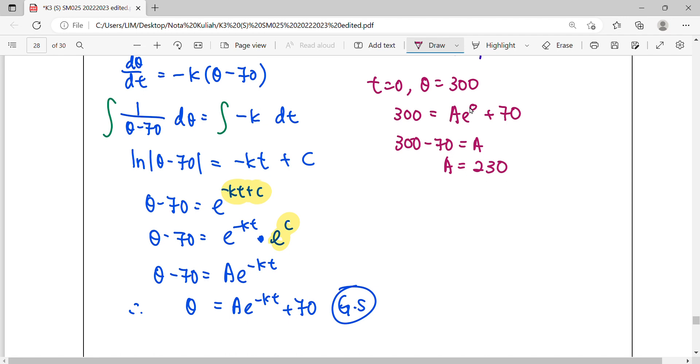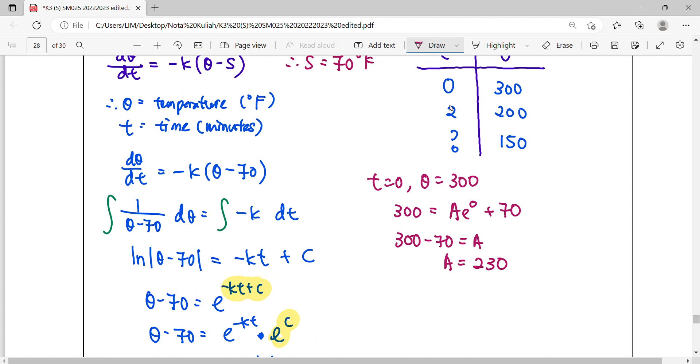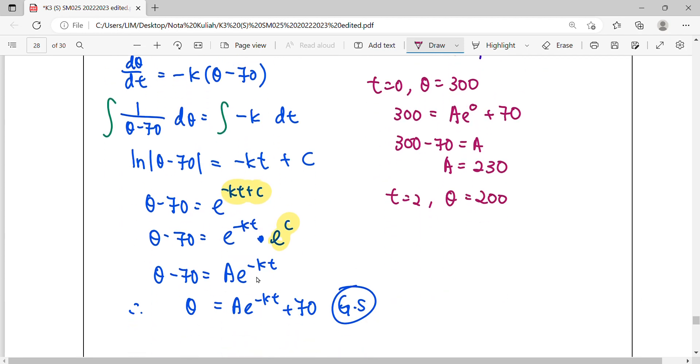Process another information: when T equals 2, theta is 200. Substitute into our general solution to find K. Simplify: remove 70 in minus, then move this constant to the left hand side by dividing.